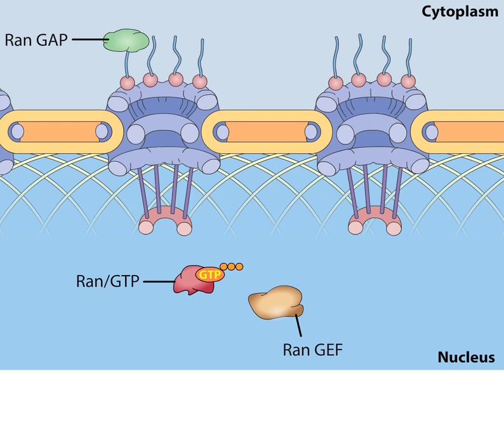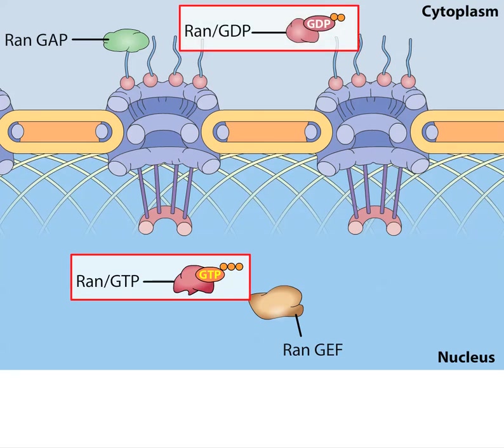By the actions of RAN-GEF found only in the nucleus and RAN-GAP found only in the cytoplasm, a steep gradient of RAN-GTP and RAN-GDP is maintained across the nuclear membrane, with RAN-GTP inside the nucleus and RAN-GDP in the cytoplasm.